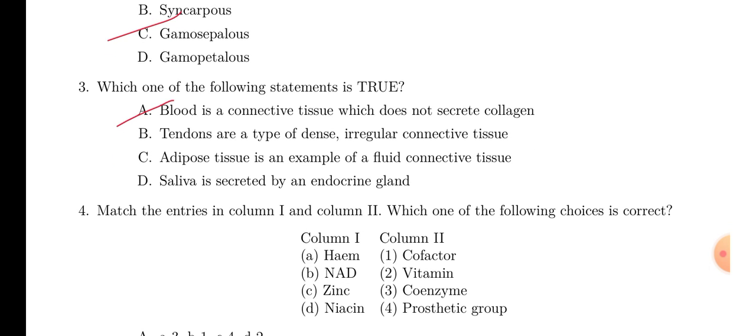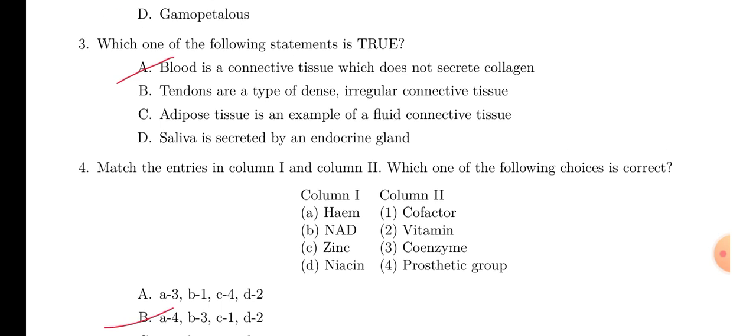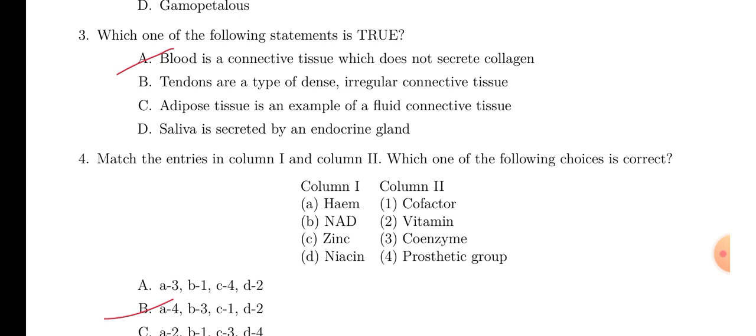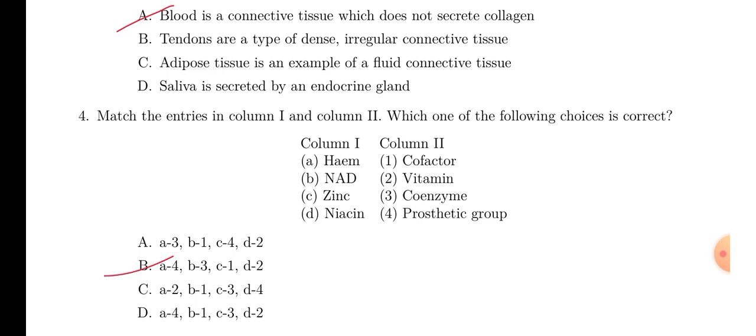Question number 3. You have to find out the true statement. You can find here, blood is the connective tissue which does not secrete collagen. Of course, it will be the right answer. Tendon, irregular connective tissue. That is the wrong statement actually. It is regular connective tissue. Adipose tissue is not a fluid connective tissue. And salivary is not an endocrine gland.